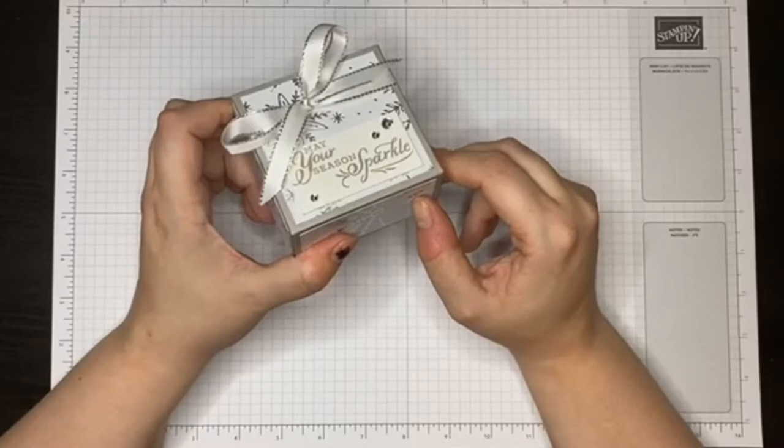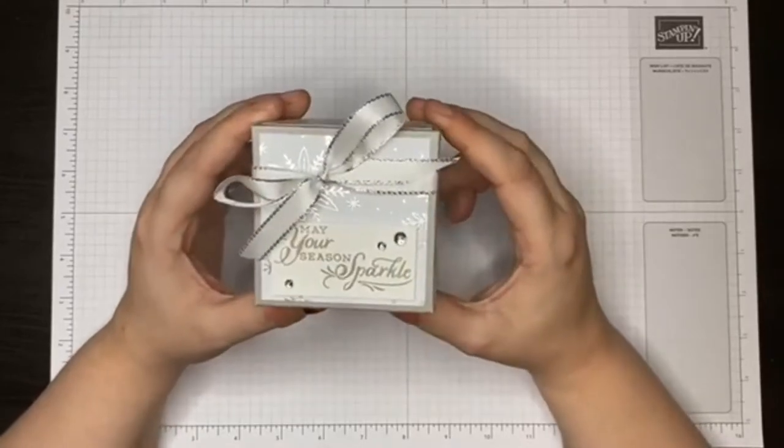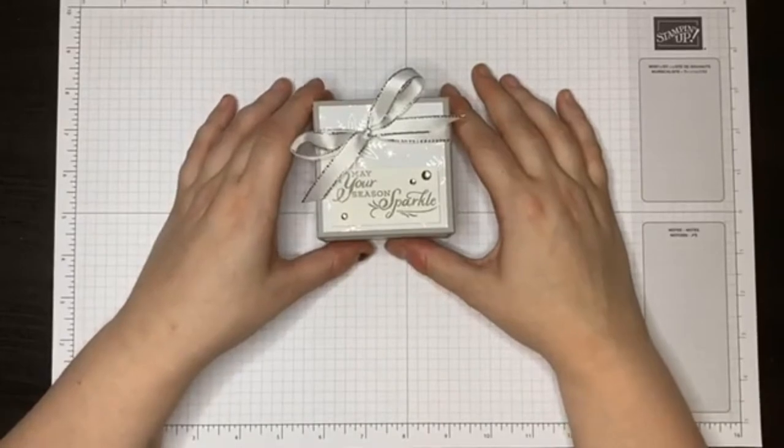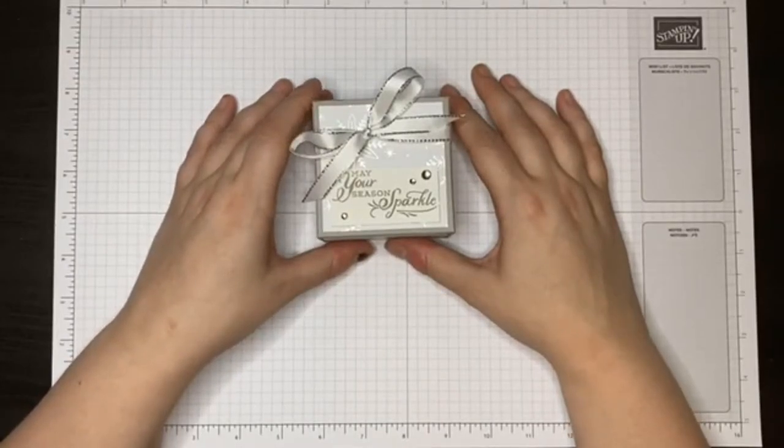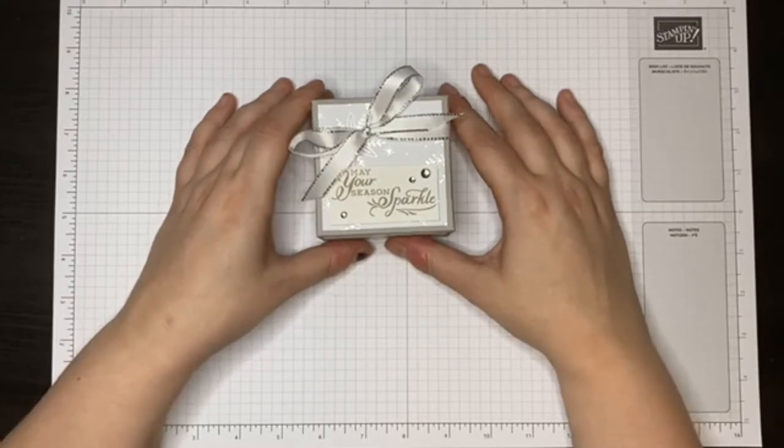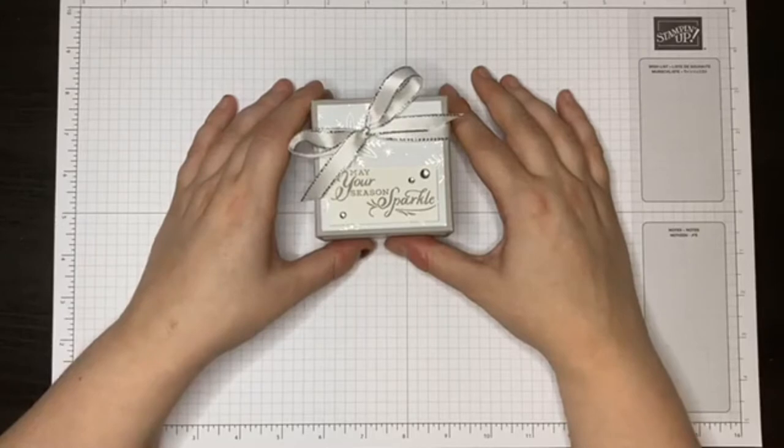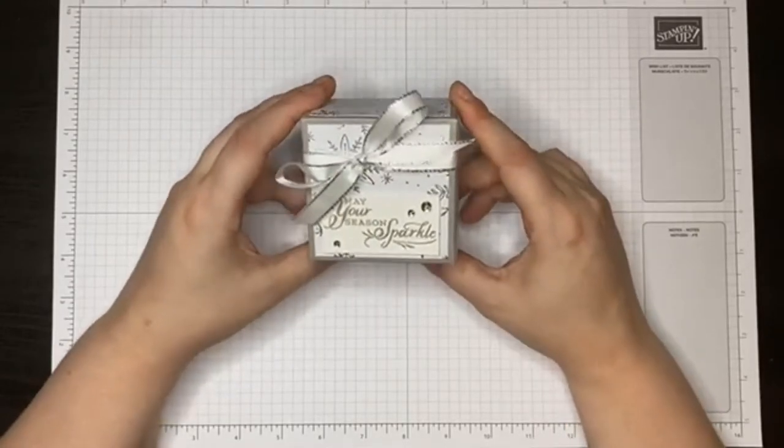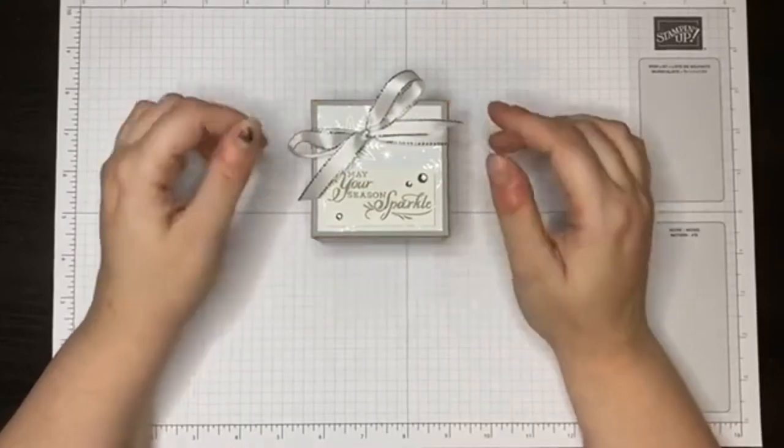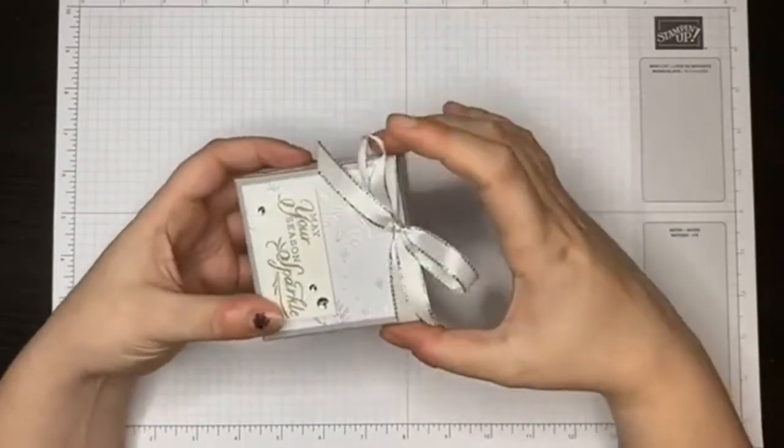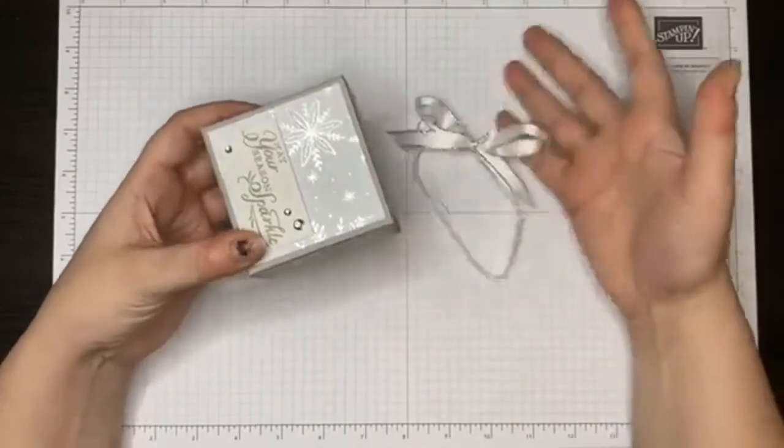Lesson learned: never trust a man to go to the post office when he says he's going, because he leaves the one parcel you really wanted him to post on the side. I'll show you the inside—you can luckily slide the bow off, and this hinge opens up.